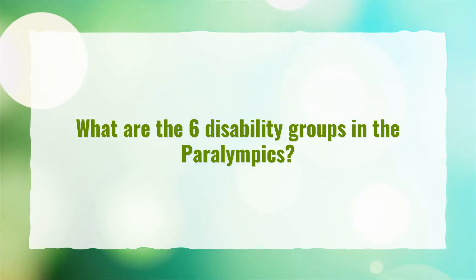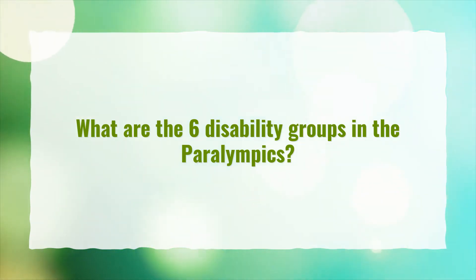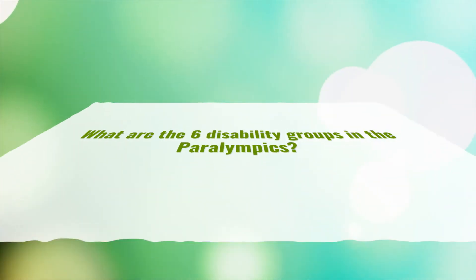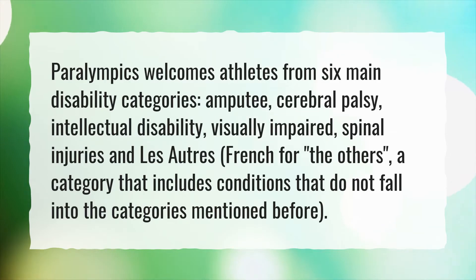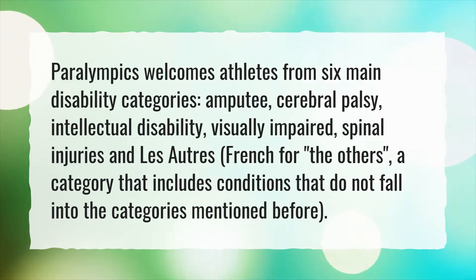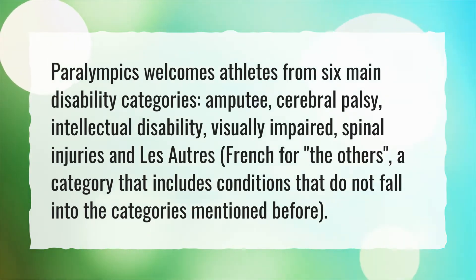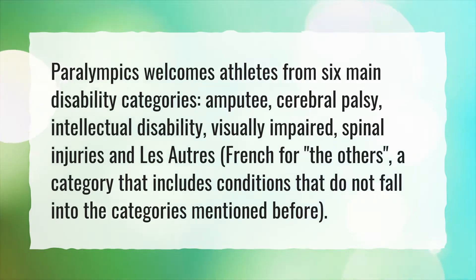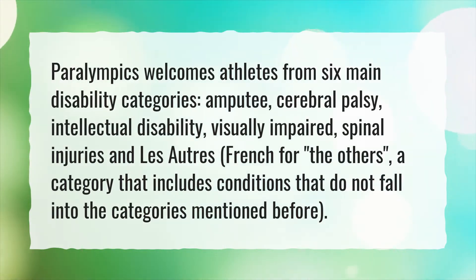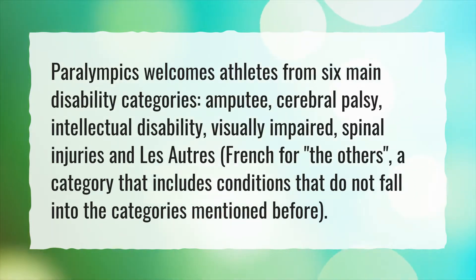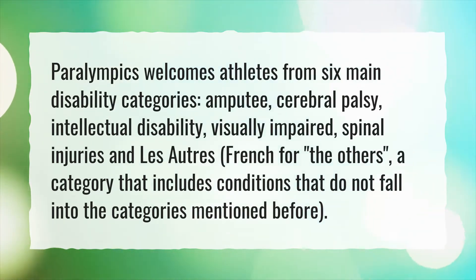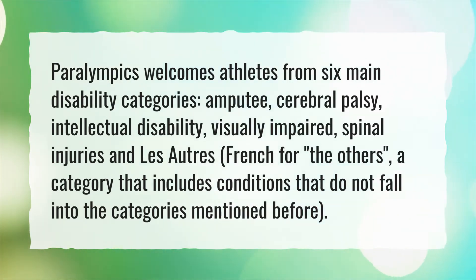What are the six disability groups in the Paralympics? Paralympics welcomes athletes from six main disability categories: Amputee, Cerebral Palsy, Intellectual Disability, Visually Impaired, Spinal Injuries, and Les Autres — French for 'the others' — a category that includes conditions that do not fall into the categories mentioned before.